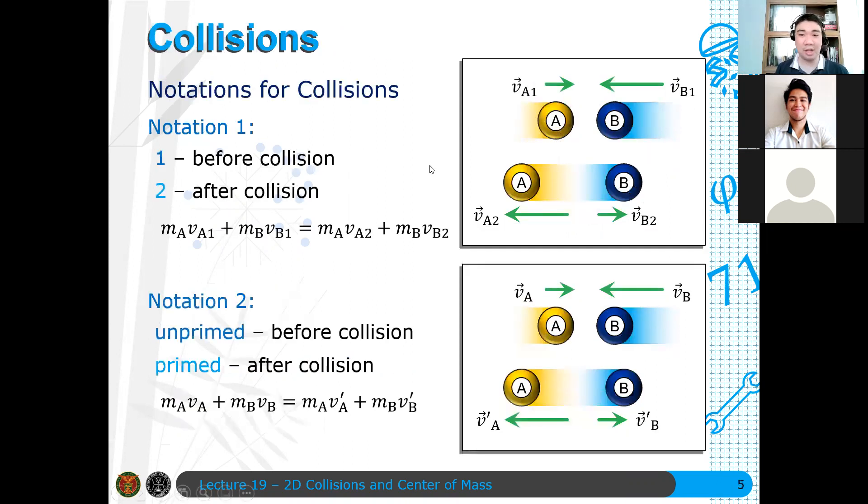We recall the notations we are using when we solve conservation of momentum problems in the context of collisions. You may use notation 1. Notation 1 is effective when there are many states. It's easier to extend notation 1 because you just add numbers. Instead of 1 and 2, if you have a third state, you have 2 and 3. It's easier to extend for more than 2 states of a particular system.